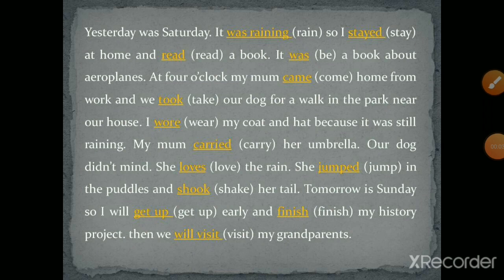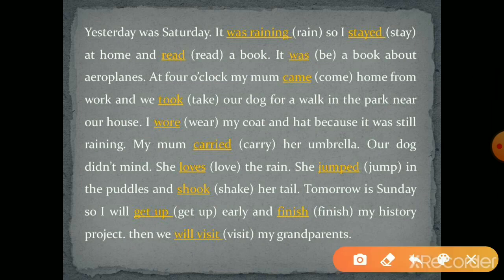Exercise D: Complete the paragraph with the correct tense of each word in brackets. 'Yesterday was a rainy day. It was raining. So I stayed at home and read a book. It was a book about aeroplanes. At four o'clock, my mum came home from work and we took our dog for a walk in the park near our house. I wore my coat and hat because it was still raining.'